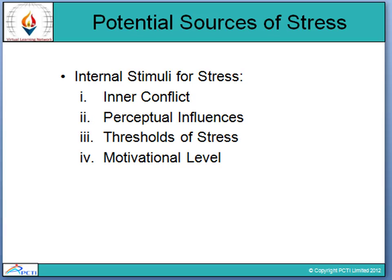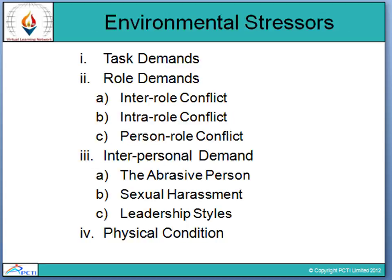Finally, the fourth internal source is motivational level. Highly ambitious and motivated people, as well as those with low ambition who are not motivated, can both experience stress. Specifically, persons whose self-expectations exceed their ability and opportunity are especially prone to stress — those whose expectations are far greater than their abilities tend to form stress more quickly.